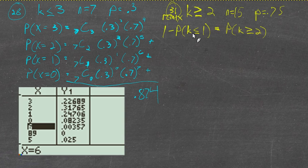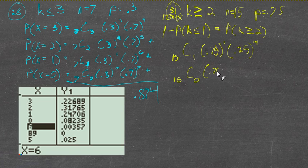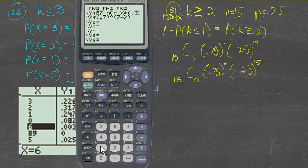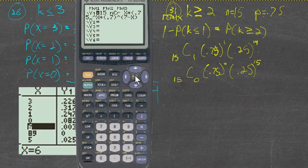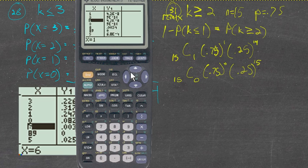So we find: 15 choose 1 times 0.75 to the 1st times 0.25 to the 14th, plus 15 choose 0 times 0.75 to the 0 times 0.25 to the 15th. Setting up the calculator with x as the number of successes: 15 choose x times 0.75 to the x times 0.25 to the (15 minus x), evaluated at x = 1 and x = 0.